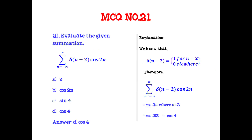Evaluate the summation: Σ (n = −∞ to ∞) δ(n − 2) · cos(2n). The answer is cos(4). Since δ(n − 2) equals 1 only when n = 2, we substitute n = 2 into cos(2n), giving cos(2 × 2) = cos(4).